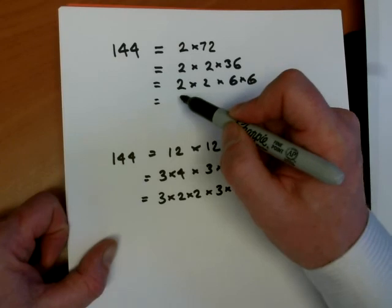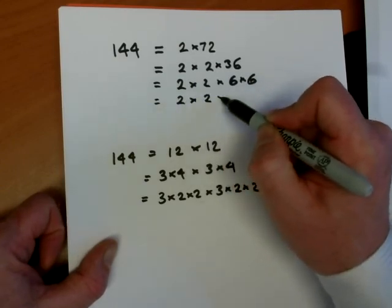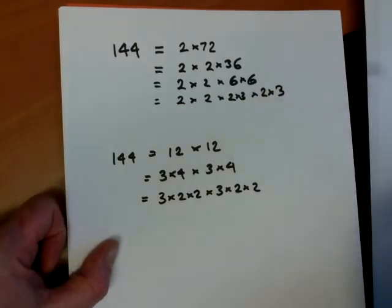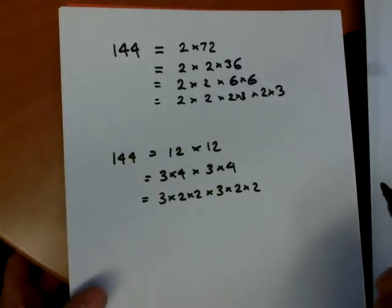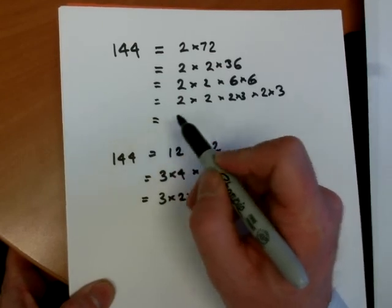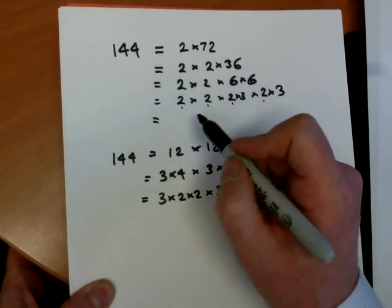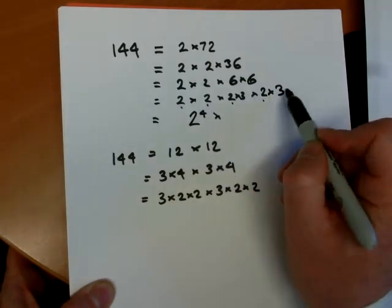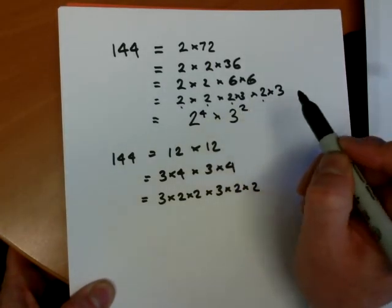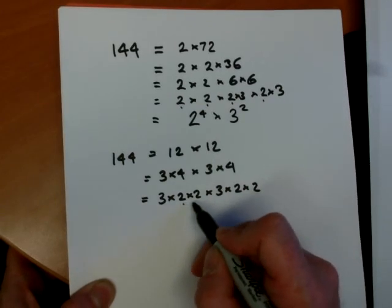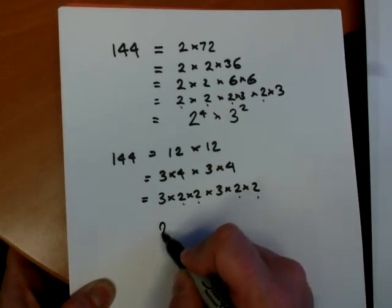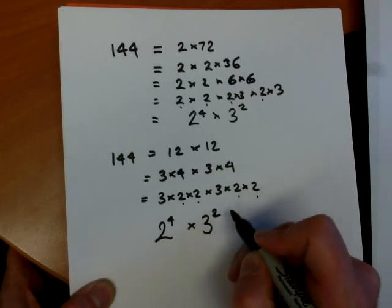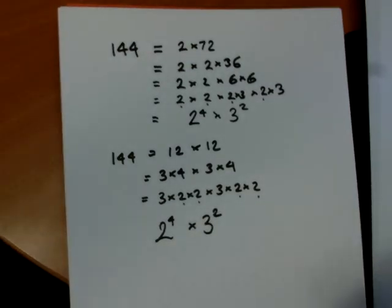And here we've got 2 times 2 times 2 times 3 for the first 6 times 2 times 3 for the second 6. So if we put them in order now, if we look at the 2's, we've got 1, 2, 3, 4. So we've got 2 to the power of 4 times 3 squared. And you'll see exactly the same when we did it the other way. So it's 2 to the power of 4 times 3 squared. So that is products of prime numbers.